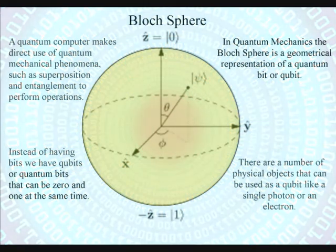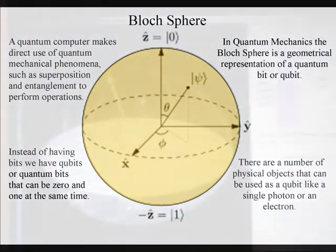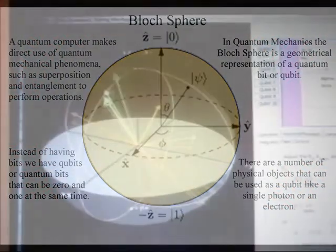There are a number of physical objects that can be used as qubits, like a single photon or an electron.